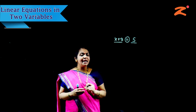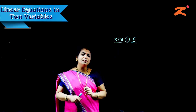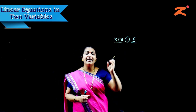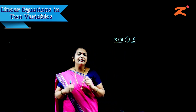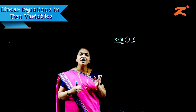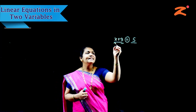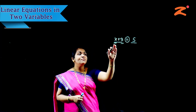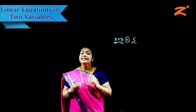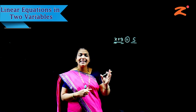Now, what are variables? Variables are those whose value can be changed. In the equation X plus 3 equals 5, the number 3 is a constant — we cannot change its value. But X can be changed to get the answer, so X is called a variable.